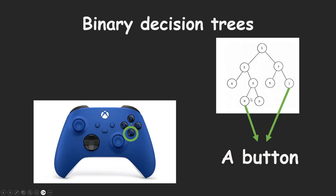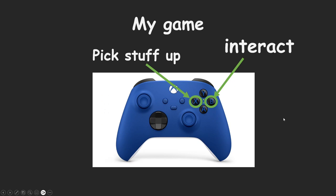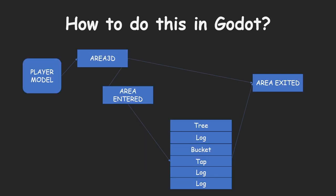For video games, state machines are not good for a single button press like the A button on a controller, because that is a discrete action — you click it and it either does something or it does nothing. There is a better way to do this: a binary decision tree. The reason binary decision trees are good is that at the end of the day you either produce an action for that button or you do nothing — a binary result. In my game the two interaction buttons are picking stuff up with X and interacting with the B button.